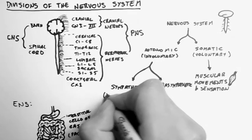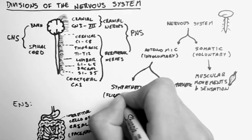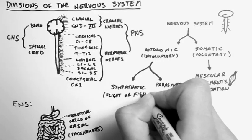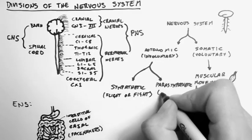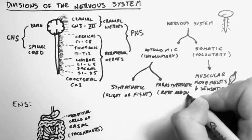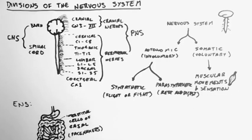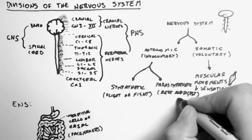The sympathetic is often known as the flight or fight response. And the parasympathetic as the rest and digest. This gives us a clue to what function these divisions have.